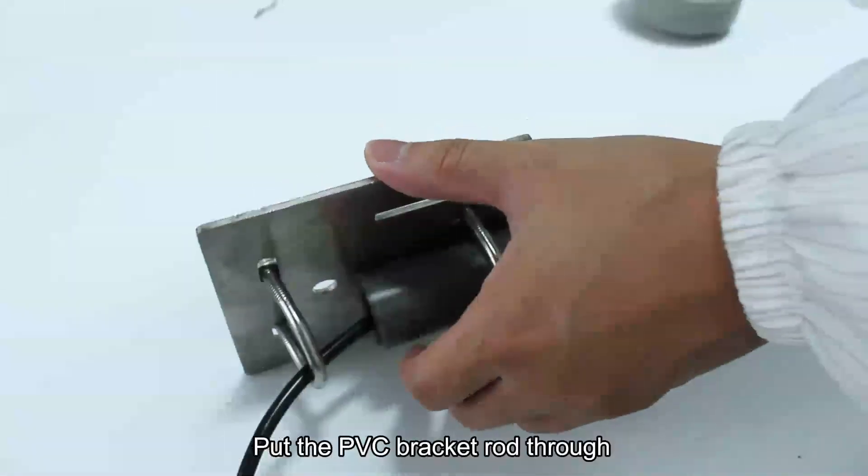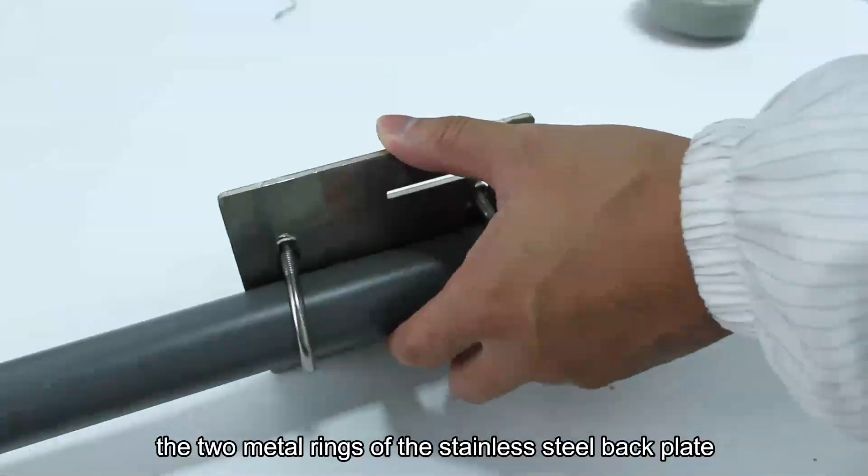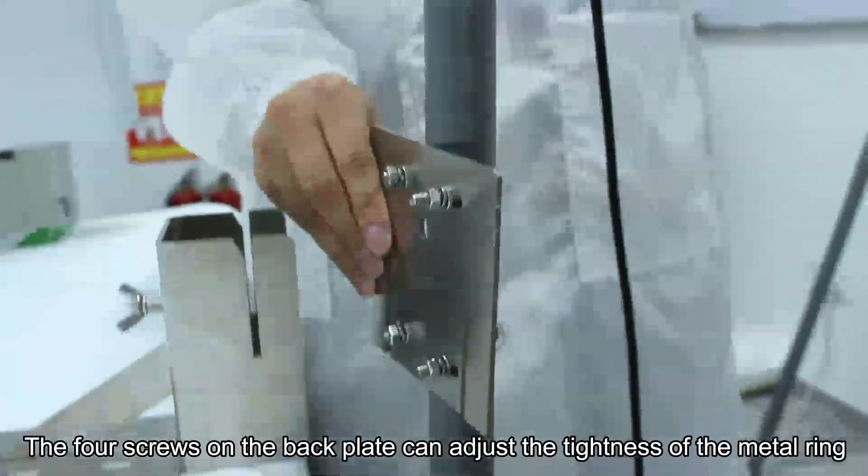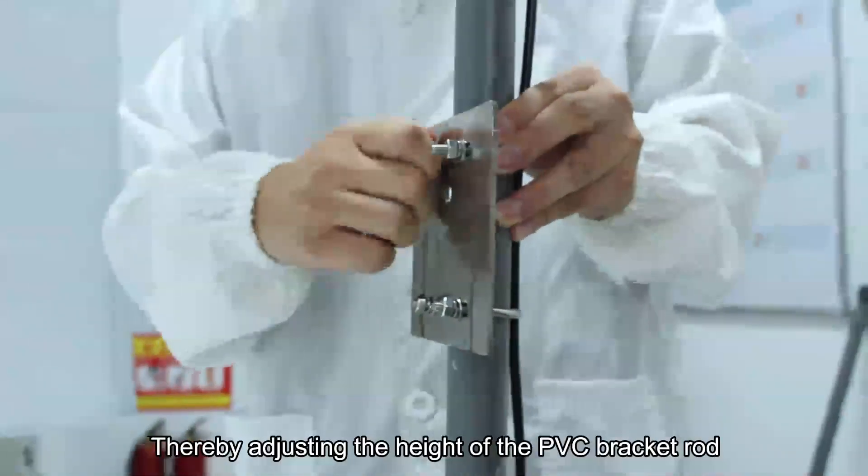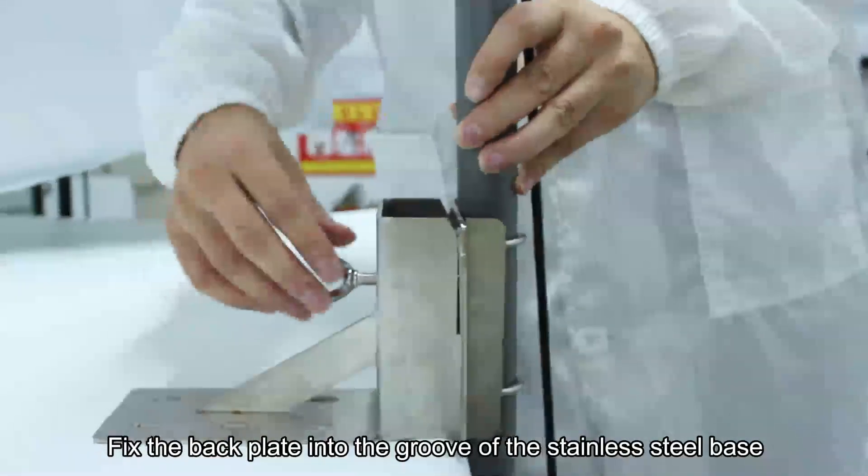Put the PVC bracket rod through the two metal rings of the stainless steel backplate. The four screws on the backplate can adjust the tightness of the metal ring, thereby adjusting the height of the PVC bracket rod. Fix the backplate into the groove of the stainless steel base.